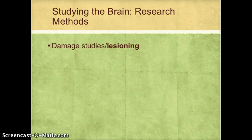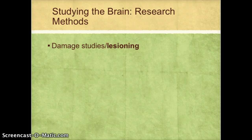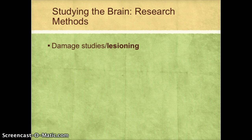Traditionally, the only way we had to study the functioning of the brain was damage studies — lesioning, or damaging the brain on purpose. For our ancient ancestors, what they would do is when somebody behaved oddly in life, when they died, they would sometimes look at their bodies to see what was different or unusual.